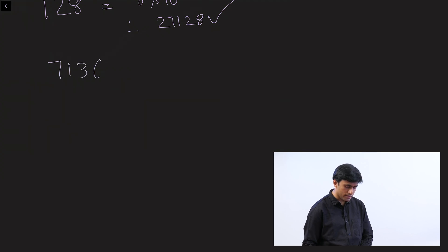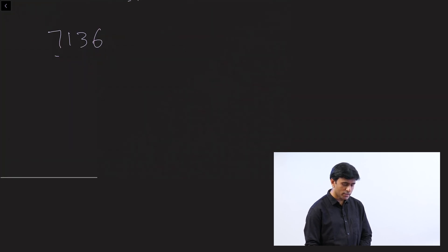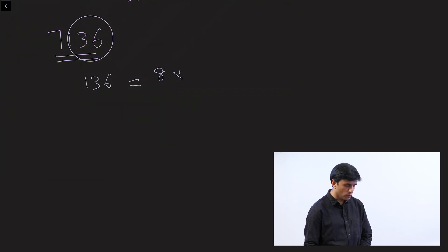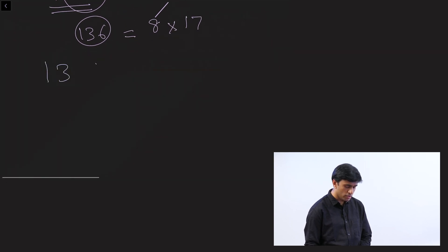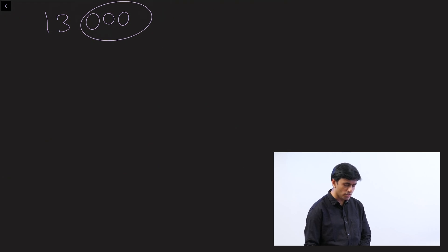Let's look at another example: 7,136. Is this number divisible by 8? Look at the last three digits — 136. Since 8 into 17 is 136, 136 is a multiple of 8, therefore this is divisible by 8. Let's take another example: 13,000. Is this number divisible by 8? The last three digits are zero zero zero, therefore it is divisible by 8. Now let's look at divisibility by 11.